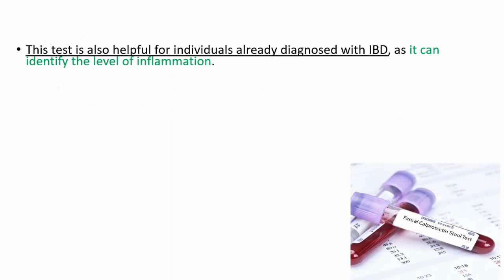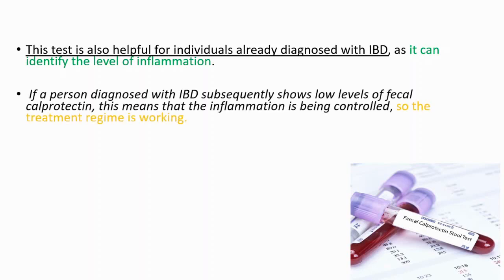This test is mostly used for diagnosing inflammatory bowel disease, but we can also use it in individuals who are already diagnosed with inflammatory bowel disease, as it can identify the level of inflammation. For example, if a person diagnosed with inflammatory bowel disease subsequently shows low levels of fecal calprotectin, this means that the inflammation is being controlled, so the treatment regime is working.